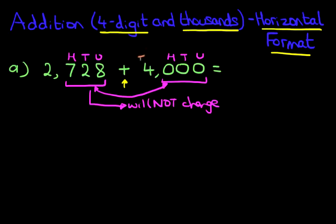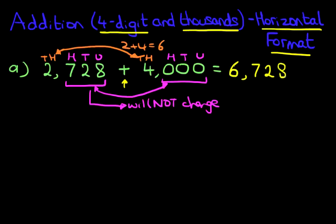Let's turn our attention to the thousands. We're going to add 2 and 4. 2 plus 4, that equals 6. So, 2,728 plus 4,000 is 6,728. The only digit which changed was the thousand. And whenever you are adding thousands which have got three zeros in there, the three digits in this example, 728, will not change.